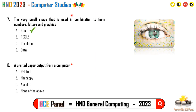For resolution, it refers to the number of pixels displayed per inch for an image. For example, 72 pixels per inch or 96 pixels per inch. If you consider one inch of a picture, you can count the number of pixels displayed there.